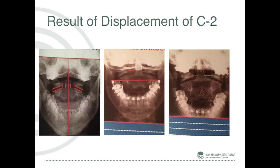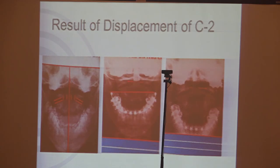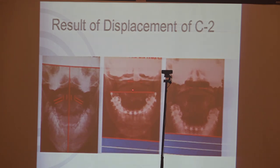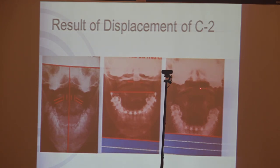Looking at this open-mouth x-ray: this area is the dens of C2, and these are the spacings between C1 and C2. In one position the occlusal plane is horizontal. Over here the vertebra is rotated to the right — the space from the dens increases, and look at how the mandible rotates up. So the vertebra rotates right, the spinous process goes left, and the mandible is distorted. The same happens rotating the other way. The position of the mandible will dictate the position of the vertebrae and vice versa — they go back and forth.